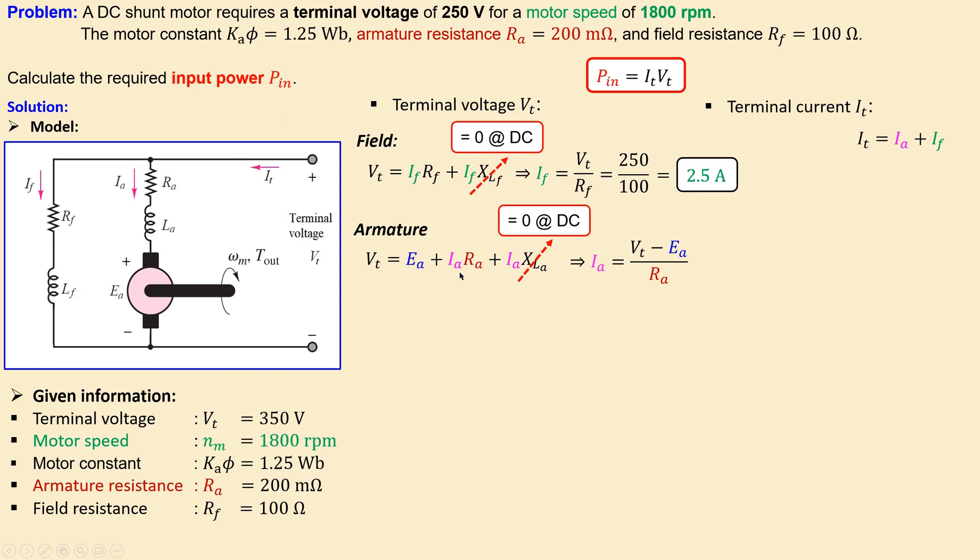Now rewriting this for the current, we can have then for the armature current: I_a = (V_t - E_a) / R_a. Now we know the terminal voltage, we know also the armature resistance, but we don't know the back EMF yet. But we can of course calculate the back EMF using the information given here in the list.